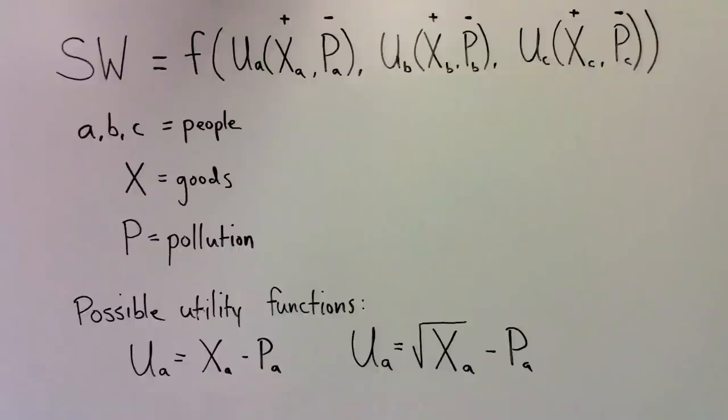The first unit of consumption increases utility by one util, but A needs three more units of consumption to increase his utility by another util. Today we'll stick with general utility functions, which simply specify that increasing any individual's consumption increases their utility by some amount, and increasing the pollution any individual endures decreases their utility by some amount.